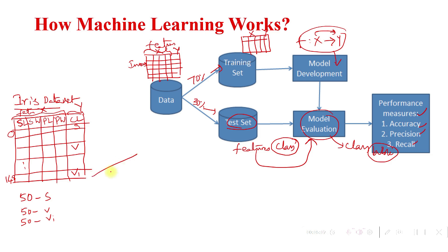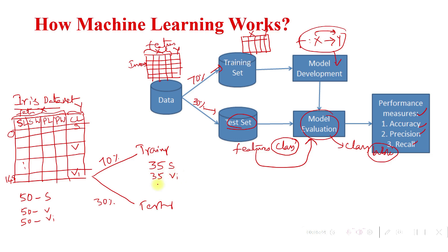The iris dataset is divided into two parts: training and testing. We randomly select 70 percent of the data — 35 instances each of setosa, virginica, and versicolor — for training. The training data contains all features: sepal length, sepal width, petal length, petal width, and the corresponding class label, which is the target variable.